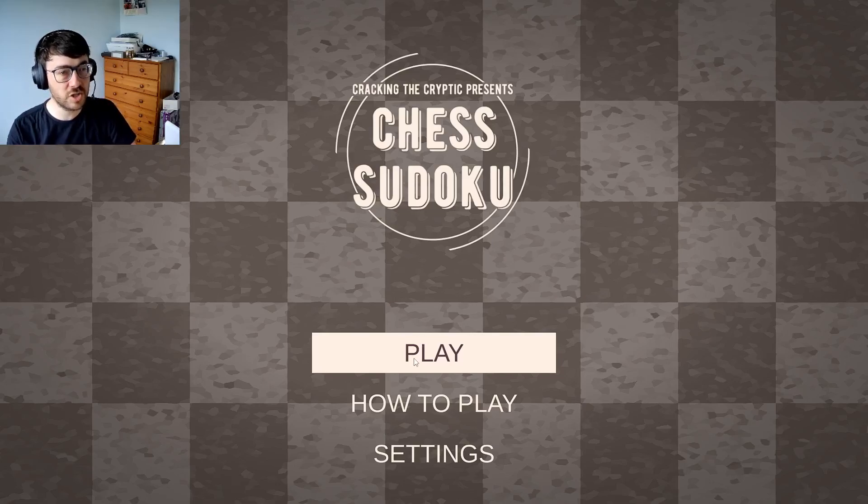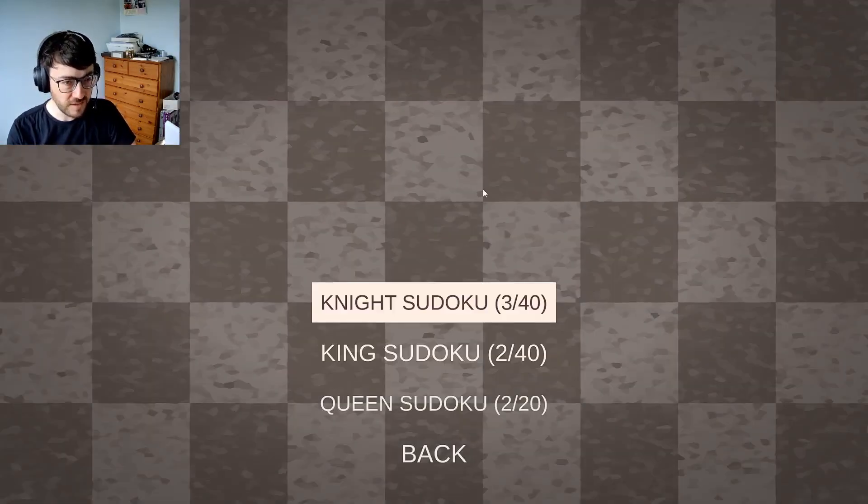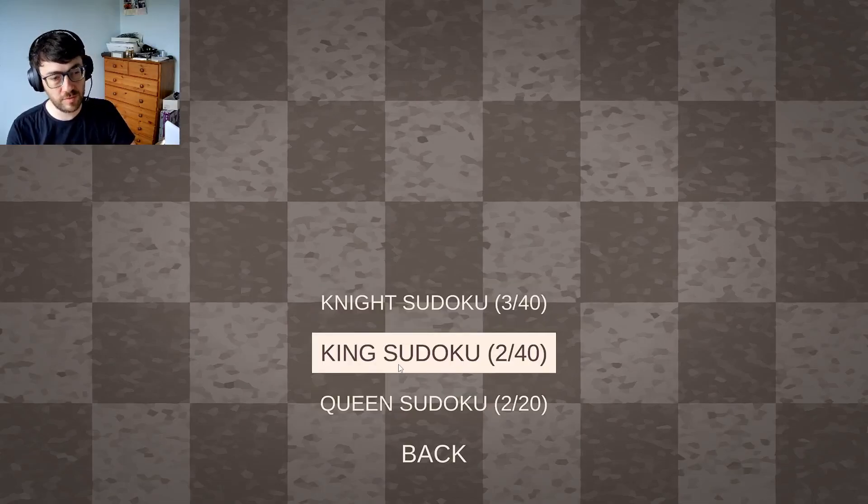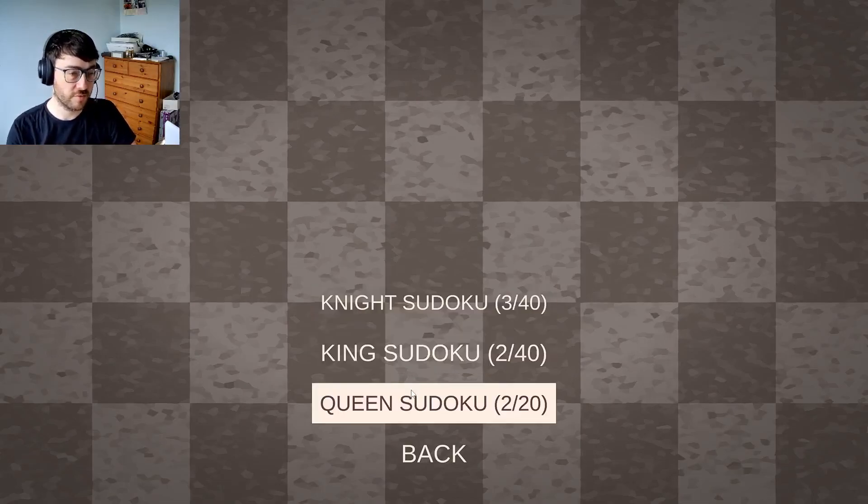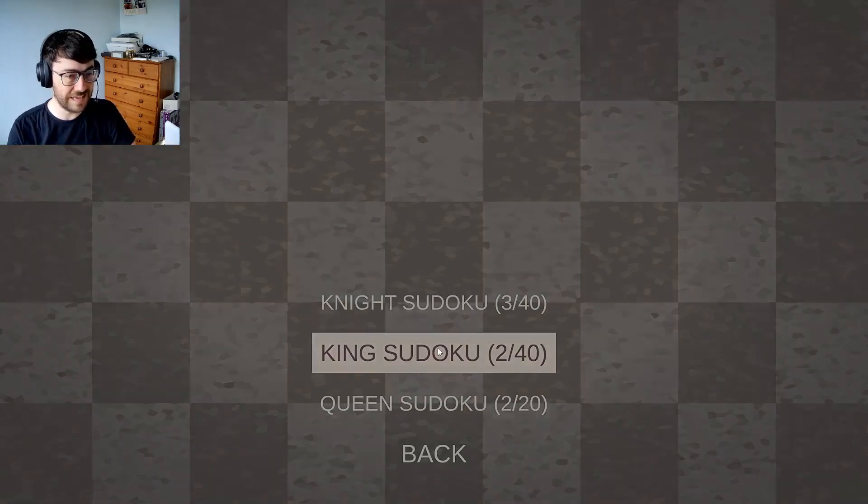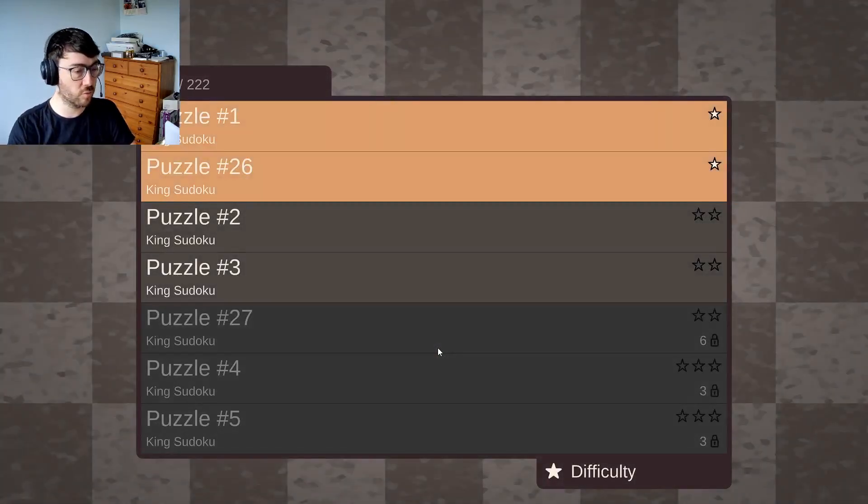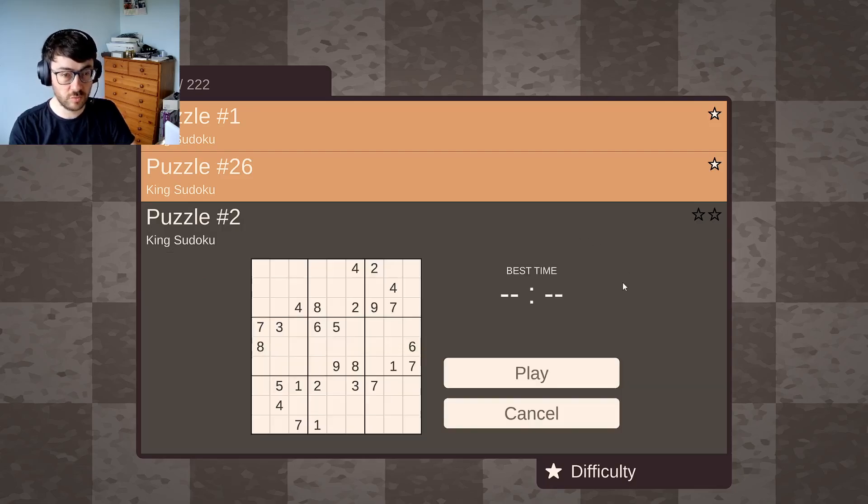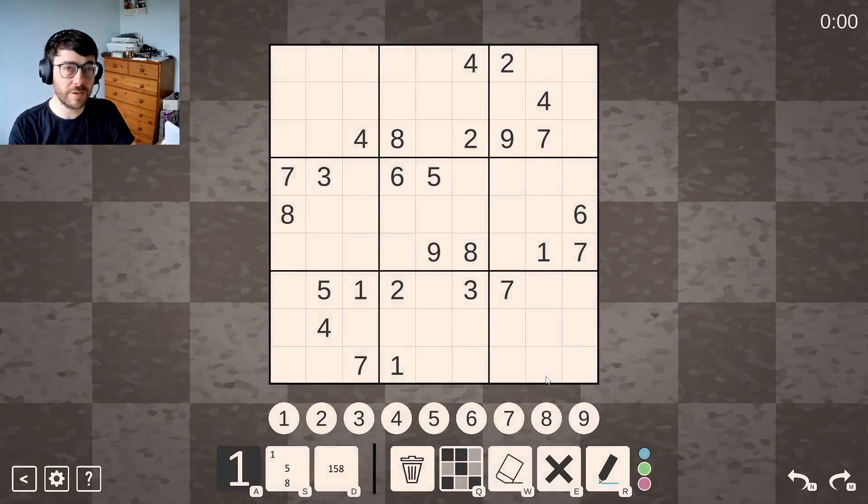Now today we're tackling a chess Sudoku, and chess Sudoku comes in three flavors by itself. So it's a variant within a variant. We will jump into King Sudoku to continue going through the order, and I will jump into puzzle number two, which is a two-star difficulty.